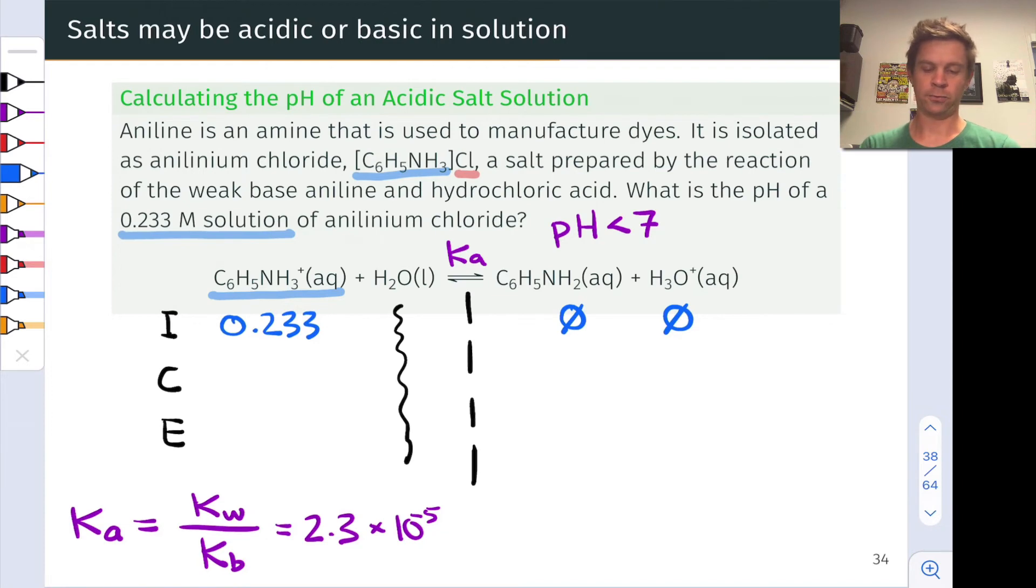So the reaction is going to go forward. So we'll have a plus x here, plus x here, and a minus x here. Now we can assume again, because the Ka value is quite small, that 0.233 minus x is pretty much the same as 0.233. So we'll put 0.233 here on the equilibrium line, x and x.